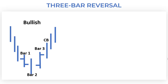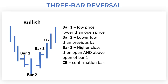The first chart pattern we're going to look at is a simple three bar reversal, which you can see on the left. We're looking at the bullish version to start with. Bar one: we have a lower close than the open price. Bar two: a lower low than the previous bar. Bar three: a higher close and above the open of bar one.